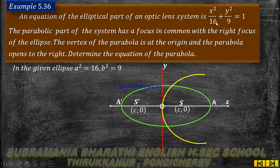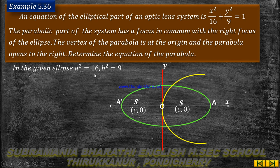The ellipse equation is x squared by 16 plus y squared divided by 9 equal to 1. Comparing with the standard form x squared by a squared plus y squared by b squared equal to 1, we get a squared equal to 16 and b squared equal to 9.